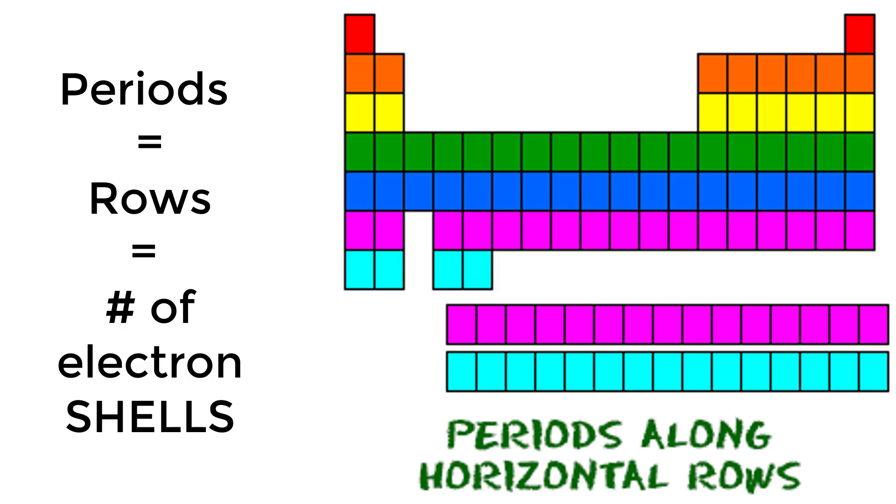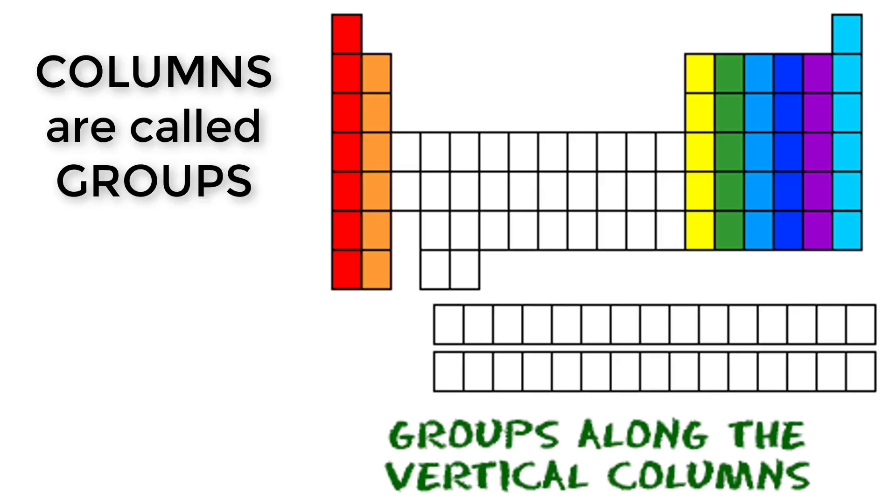So now that you know about periods that go left to right, the periodic table also has a special name for its vertical columns. Each column is called a group.